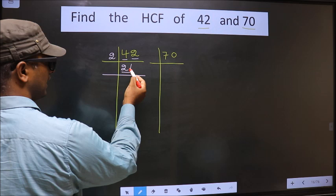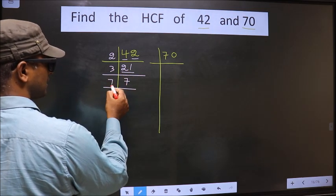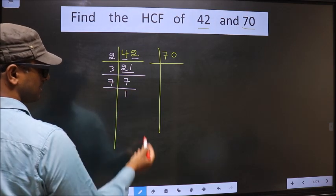Now, here we have 21. 21 is 3, 7 is 21. We have 7. 7 is a prime number. So, 7, 1 is 7.